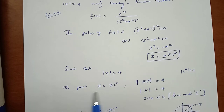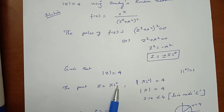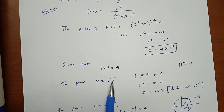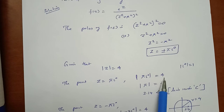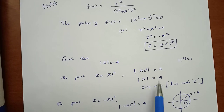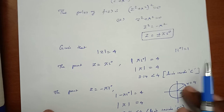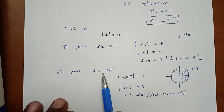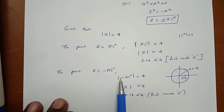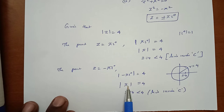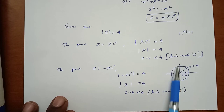We check whether each pole lies inside or outside the circle |z| = 4. For z = πi: |πi| = π ≈ 3.14, which is strictly less than 4, so it lies inside C. For z = −πi: |−πi| = π ≈ 3.14, which is also less than 4, so it too lies inside the circle C.